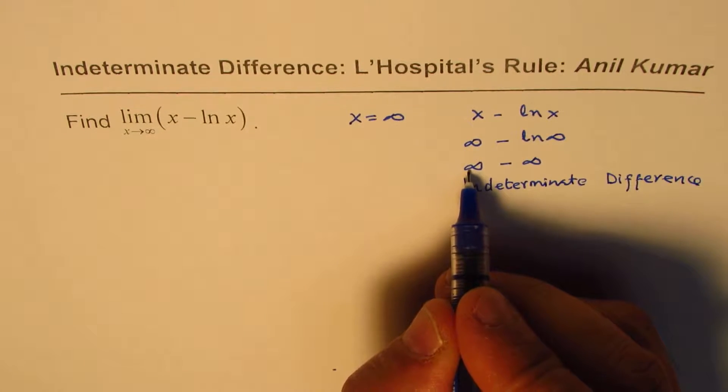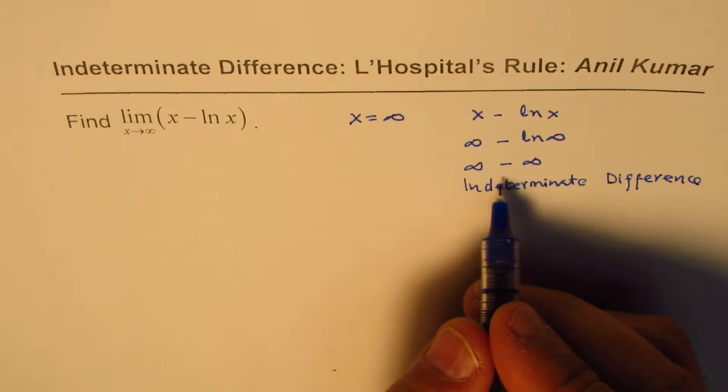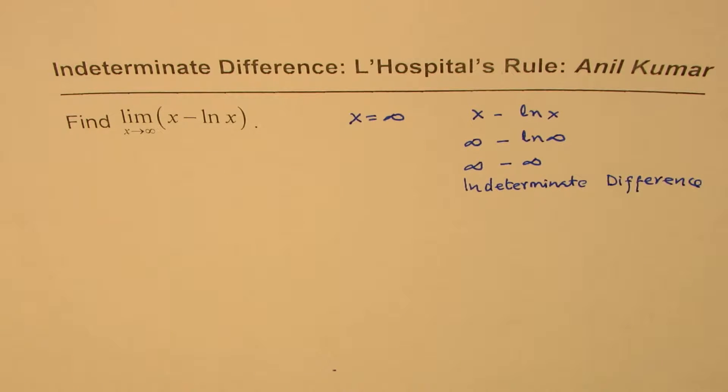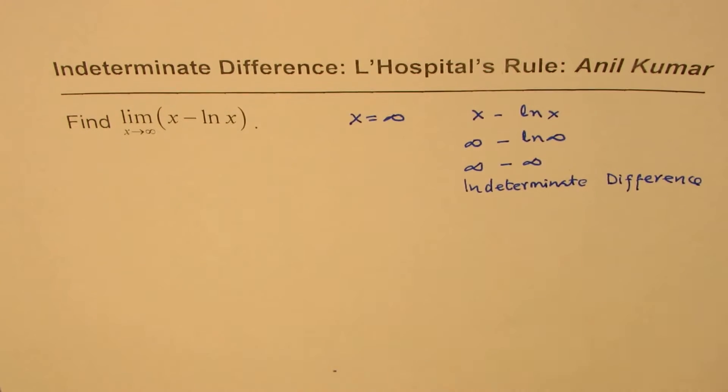If this one is bigger we get positive infinity. If that one is bigger we may get negative infinity. If they are similar we'll get something in between. That is the part which we are not very sure of, and therefore we can apply L'Hôpital's rule to find the derivative.